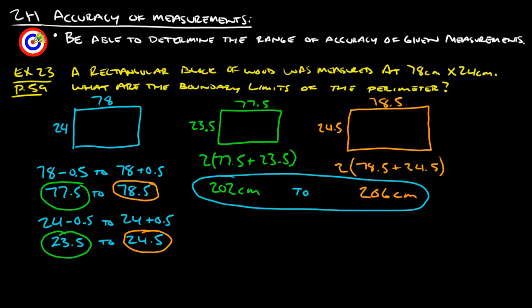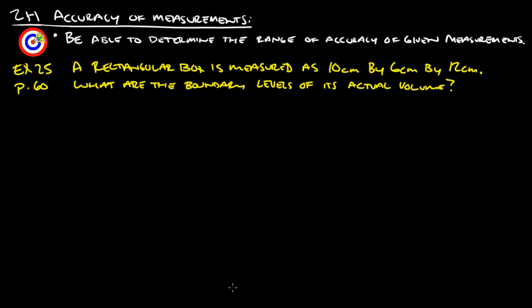It would probably be really good for us to take a look at example 25 on page 60 as well. This one says: a rectangular box is measured as 10 centimeters by 6 centimeters by 12 centimeters — what are the boundary levels of its actual volume?